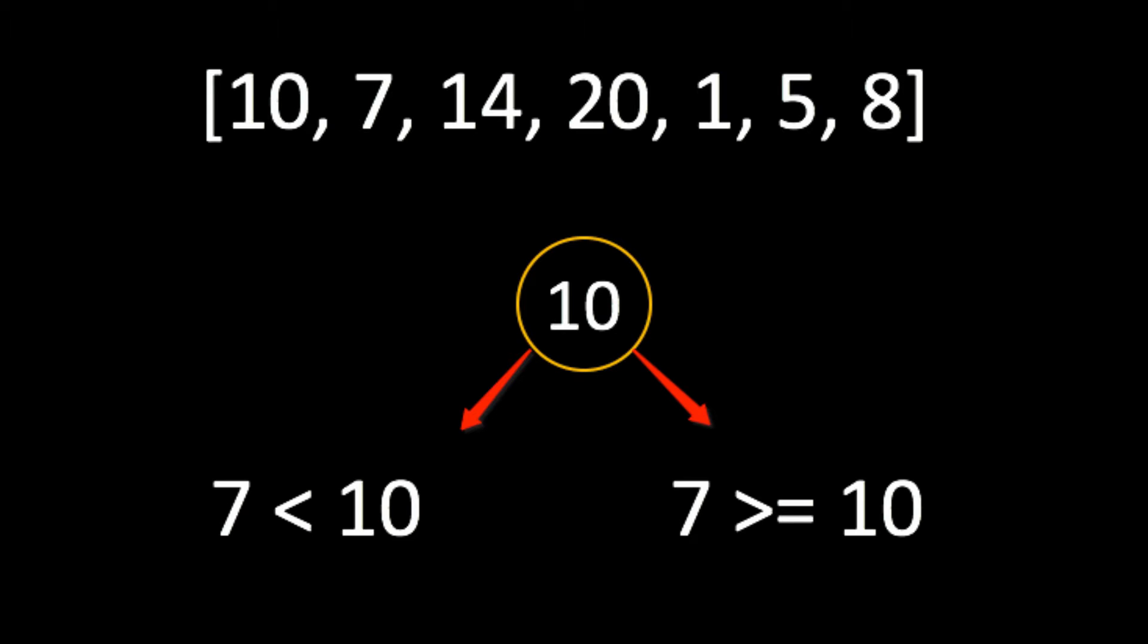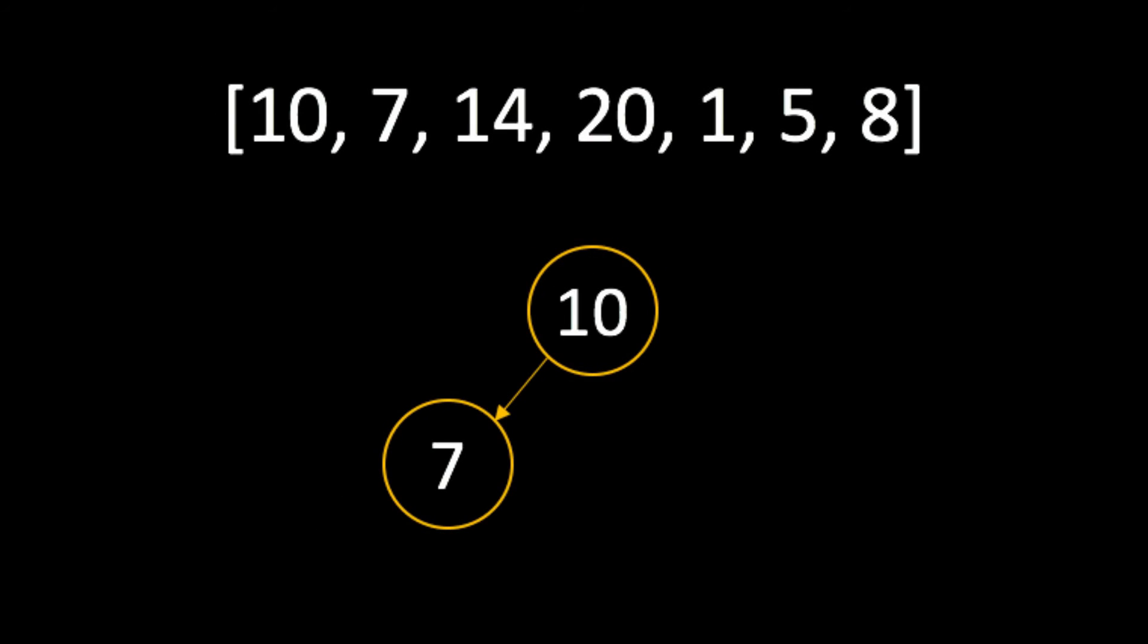If 7 is greater than or equal to 10, it'll move to the right. Since we know that 7 is less than 10, we designate it as the left child node, as shown here. Following the same pattern, we perform the same comparison with the 14 value in the array.